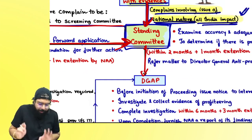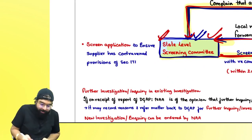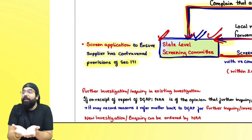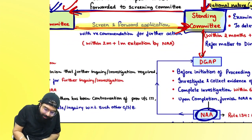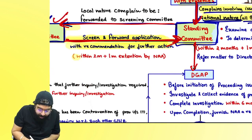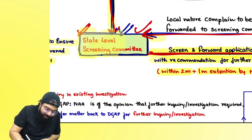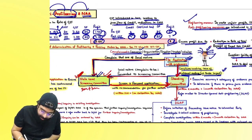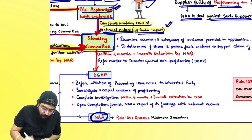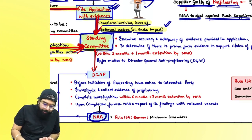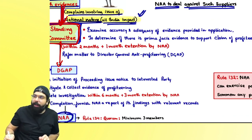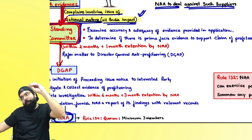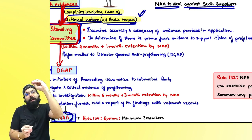The state-level screening committee will ensure the supplier has contravened the provisions of Section 171. They will first ensure whether actually there is profiteering happening or not, then screen and forward the application to the authority with recommendation for further action — within two months, plus one month extension. Screening should be done within two months plus one month extension. National impact complaints go directly to the standing committee; local complaints first go to the state-level screening committee.